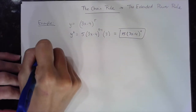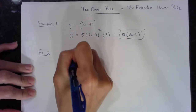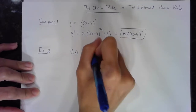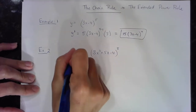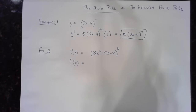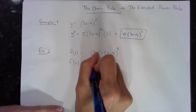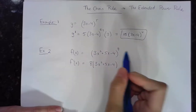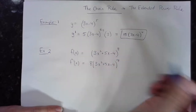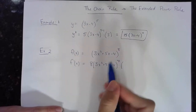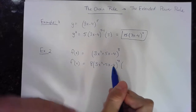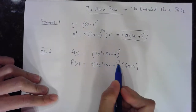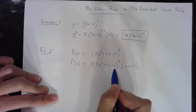Let me do another example. f of x is equal to 3x squared plus 5x minus 4, raised to the eighth power, and I want the first derivative. Using the extended power rule, I'm going to take that exponent and bring it down. I'm going to maintain the base 3x squared plus 5x minus 4. I subtract 1 from the exponent, which becomes a 7, and multiply by the derivative of the base. The derivative of 3x squared plus 5x minus 4 is 6x plus 5.